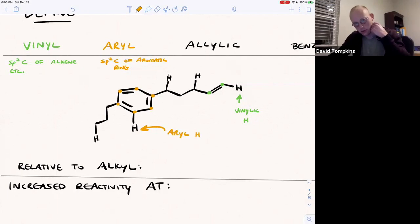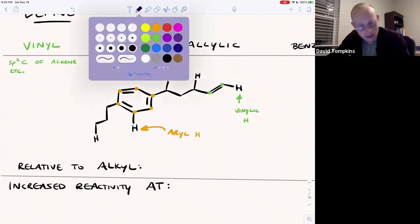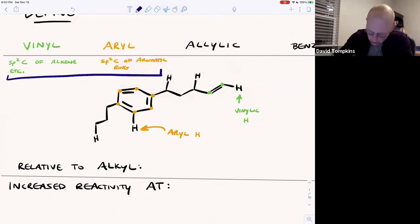So we will learn reactions of aryl hydrogens in organic 2 when we talk about electrophilic aromatic substitution, and you may have already done that, but for the most part, these vinylic and aryl positions are usually pretty inert to reactive processes.